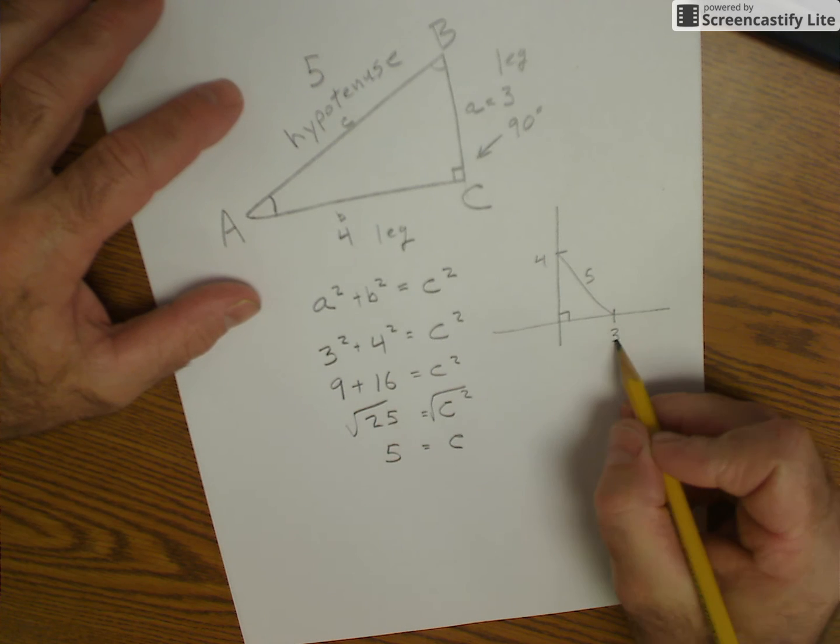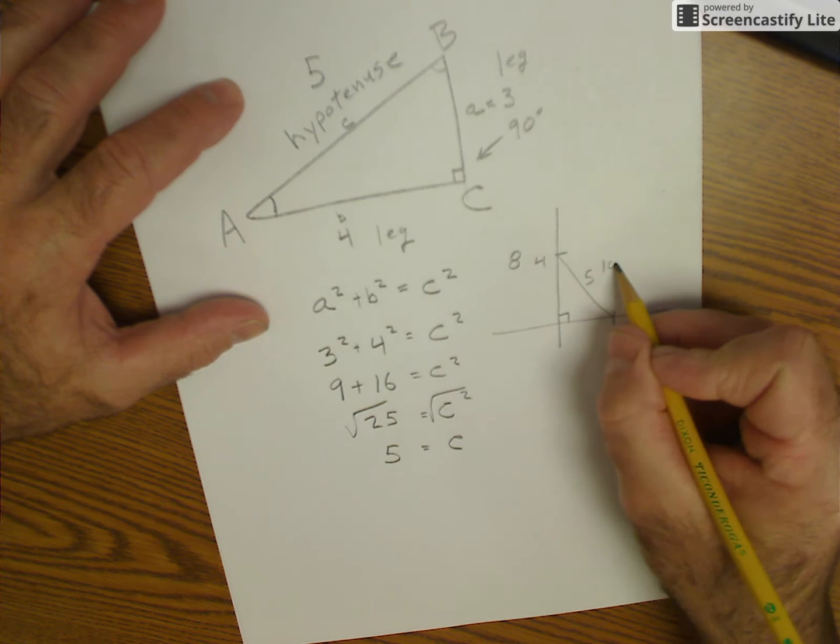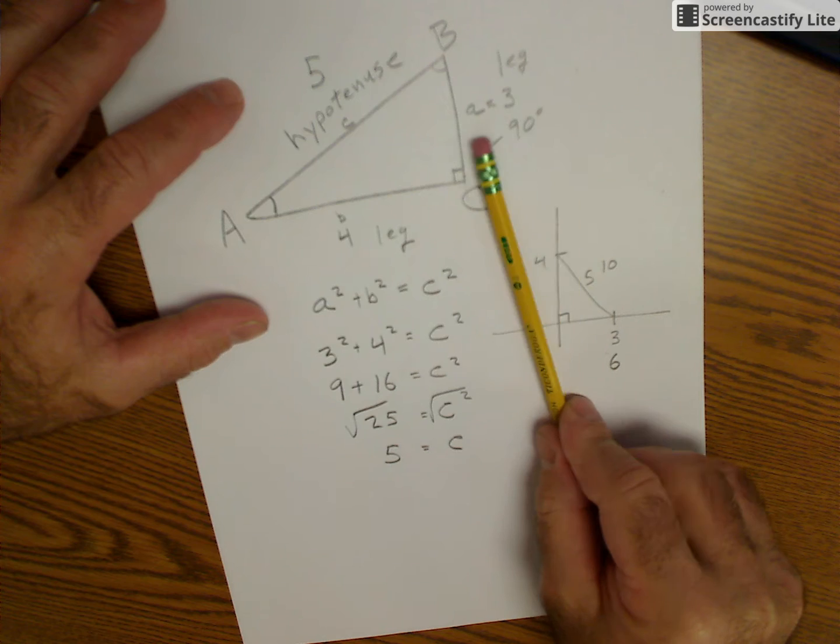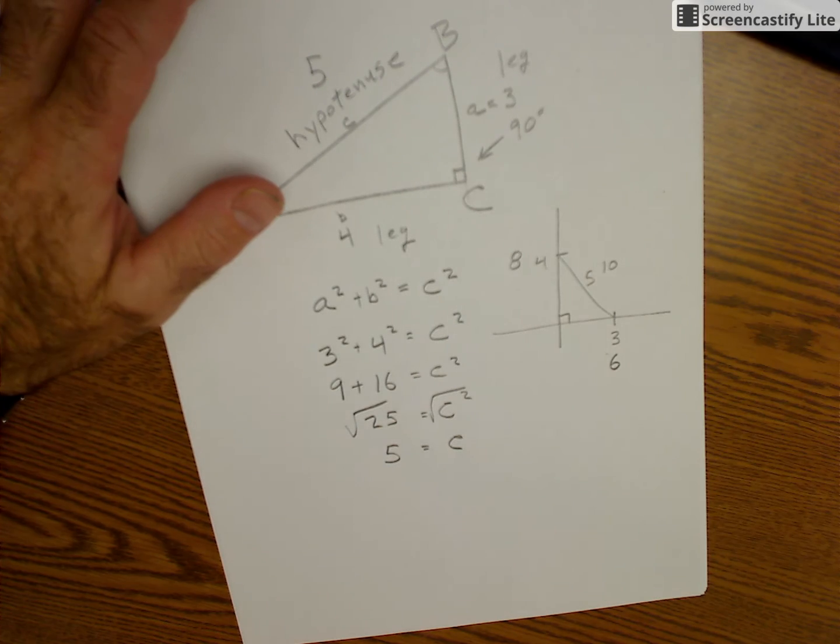And this could be, you could double a 3 and make this a 6. This would be an 8, and then this would have to be a 10. So you'd move this leg until that string was equal to 10, and then you know that you're perpendicular.